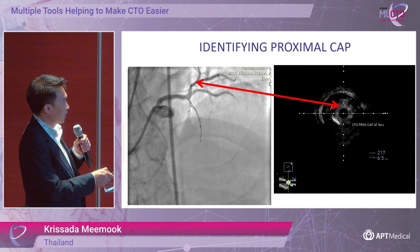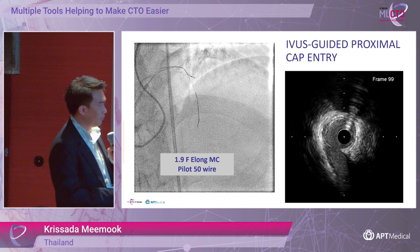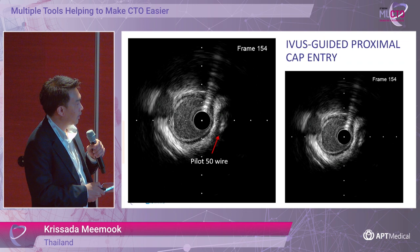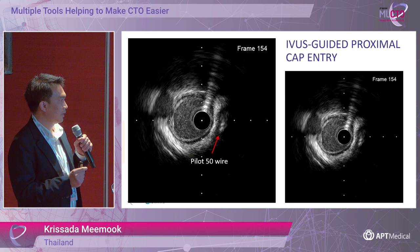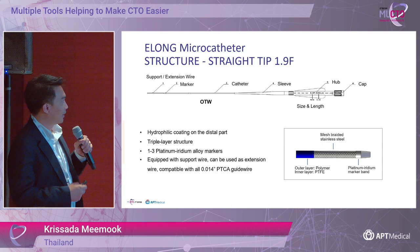So we put the ELONG microcatheter with the Pilot 50 wire to puncture the proximal cap. This is the IVUS real-time image as we pull back from the septal branch. Now you can see the Pilot 50 wire going into the intimal part of the CTO. I think this is inside the vessel wall, so we advanced the microcatheter into the CTO segment. This is an example of the ELONG microcatheter.